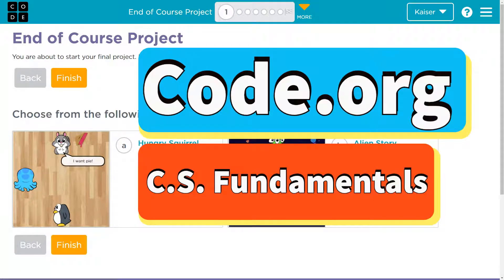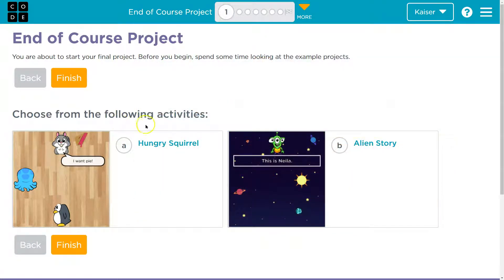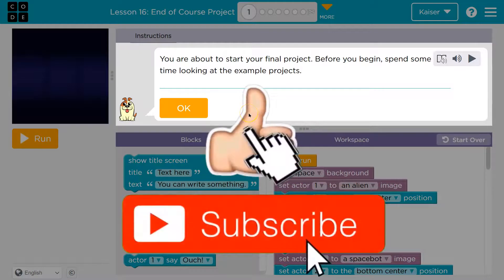This is code.org and we are on our end of course project. So we get to choose from these activities students, up to you. The nice thing is that the requirements will be the same, so I can walk you through either way. I'm definitely going with alien story, but if you want, hungry squirrel will work for this just as well.